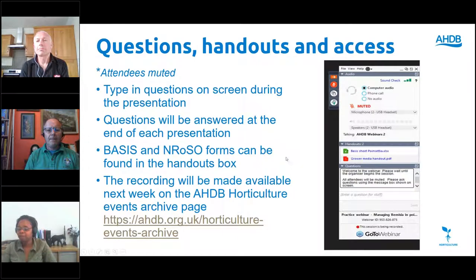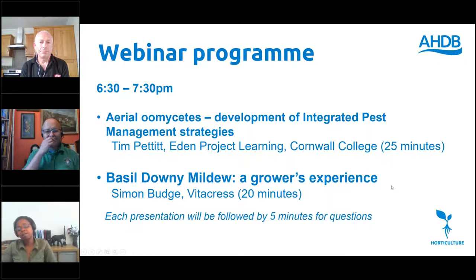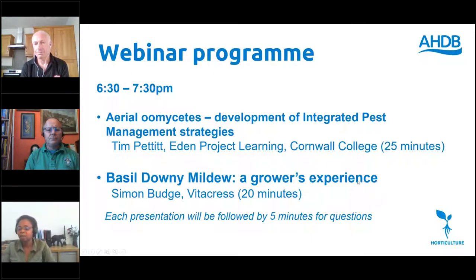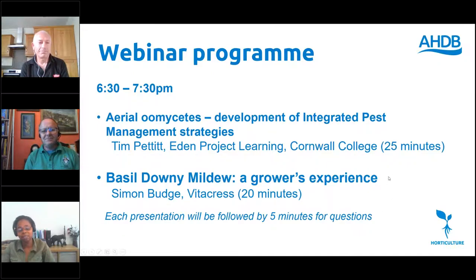At the present moment we have 35 attendees listening, but we had 69 registered, so maybe that will pick up as we go. Going on the program, this should not last more than an hour. We're starting off with Tim Pettit of Eden Project Learning Cornwall College, and Tim is speaking on aerial Umacit development of IPM strategies. He'll speak for 25 minutes, after which we'll have five minutes for questions, and then we'll have Simon Budge from Vitacurbs Herbs, speaking on Basil Downy Mildew experience. These two people really know about what they're speaking about, because Tim has worked on all my seed diseases quite a lot, and Simon has been growing for a long time and controlling those diseases.